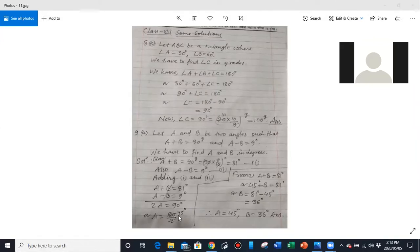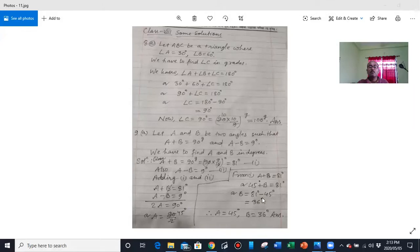So in equation 1, A plus B equal to 81 degree. Value of angle A already found. So 45 plus B equal to 81 degree. A is replaced by 45 degree. Therefore B equal to 81 minus 45, that is 36 degree. So we have found both angle A and angle B. Angle A is 45 degree, angle B is 36 degree. So this is how to solve.